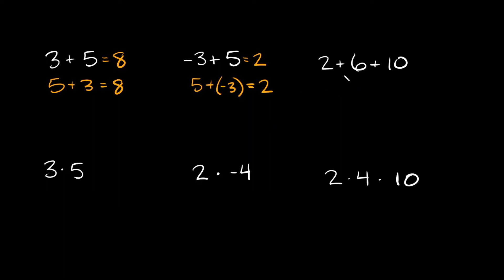Or here we have three different digits. I have 2 plus 6 plus 10, and that's equal to, let's see, 2 plus 6 is 8, and then 8 plus 10 is 18. But if I switch this around, if I do 10 plus 2 plus 6, well I still get the same answer. 10 plus 2 is 12, and then 12 plus 6 is 18.